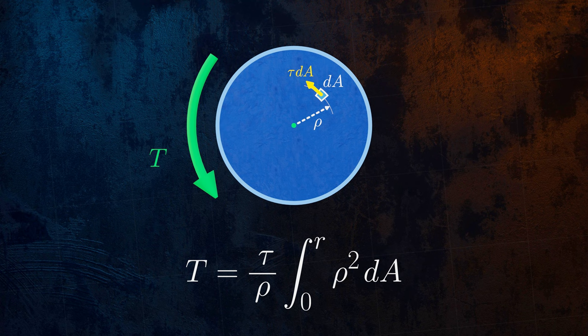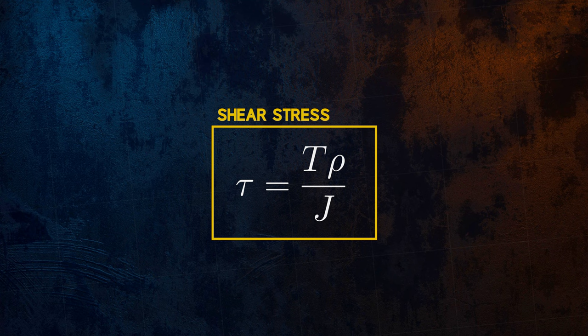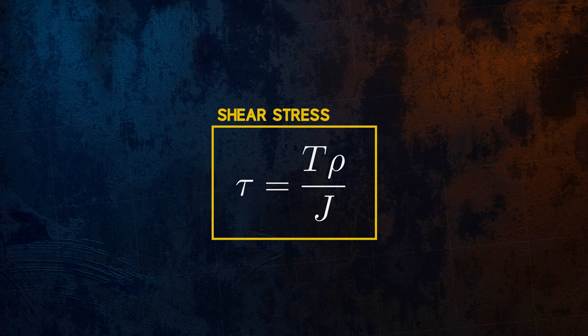It turns out that the integral we now have on the right is actually the definition of the polar moment of inertia, so we can replace it with the letter J, and we can rearrange this to get an equation for shear stress. The shear stress is a function of the torque T, the distance rho from the center of the cross section, and the polar moment of inertia J. It's quite a simple equation.